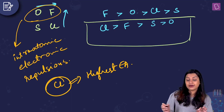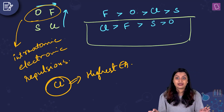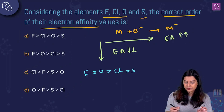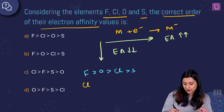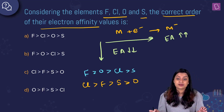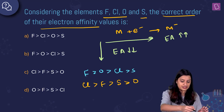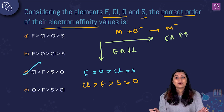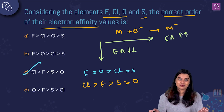As a result, chlorine actually has the highest electron affinity of all elements in the periodic table. The observed order is Cl > F > S > O, which corresponds to option C — the correct answer to this question.